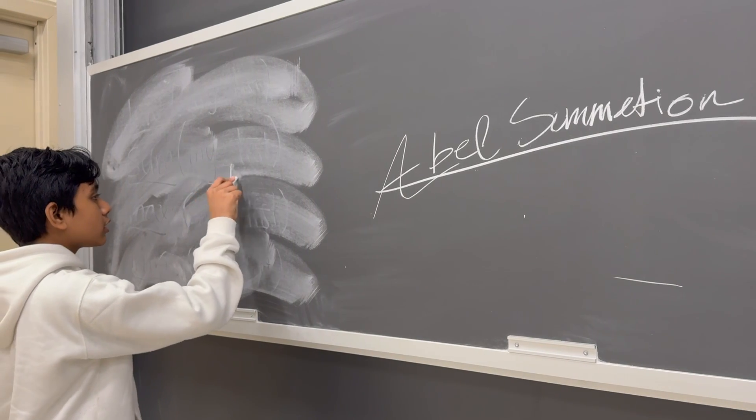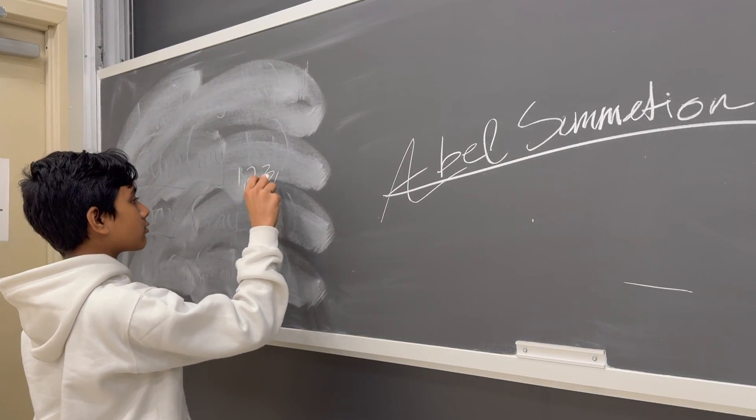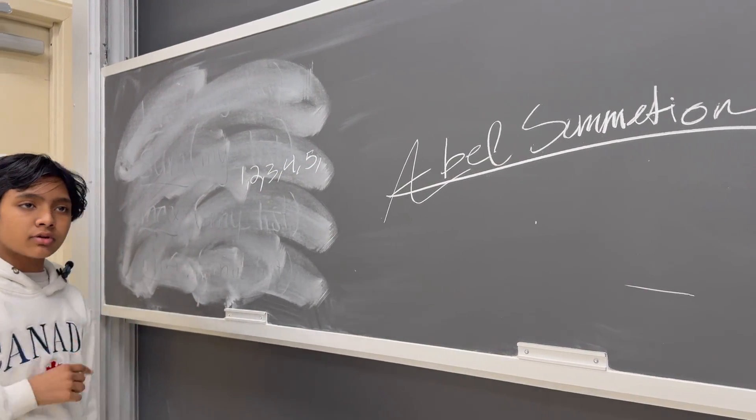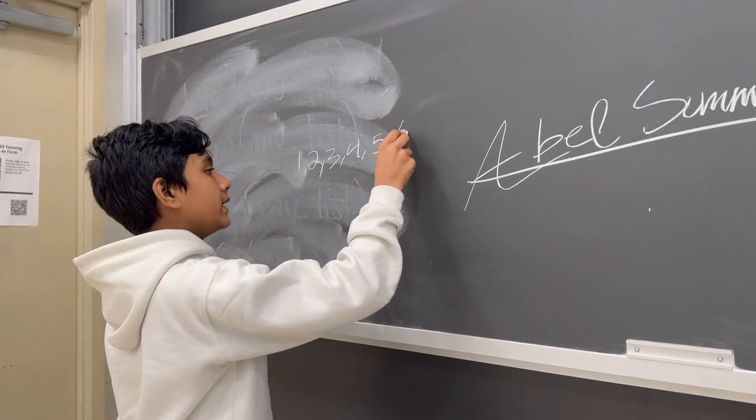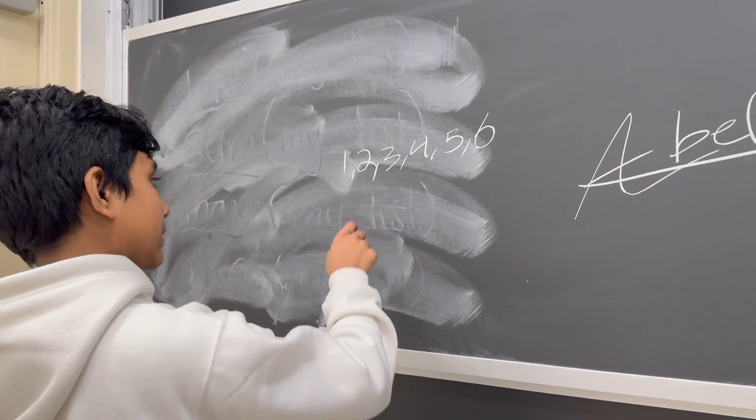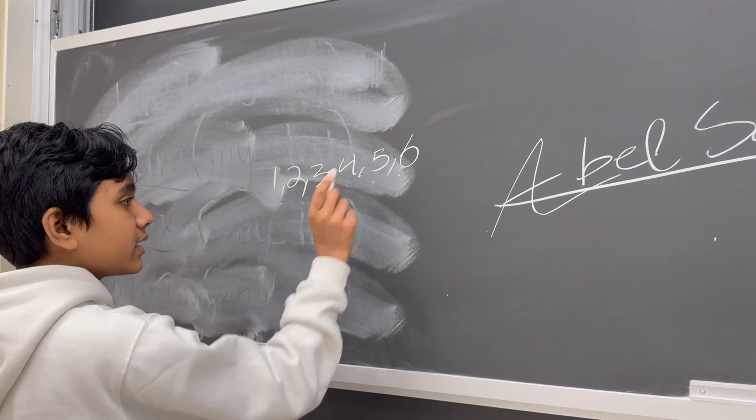You may recall that there are things that we call series. Some series are finite, which might end at some specified number, like the series 1, 2, 3, 4, 5, 6.